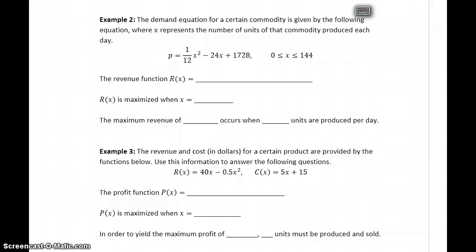Keeping in mind that a revenue function can always be generated by taking x, the number of units produced, number of units sold, times the price that those are sold for, gives us a revenue function of x times 112, x squared, minus 24x, plus 1728. So, the first step is generating that revenue function, so that then we can find the value for x that would maximize that revenue function.